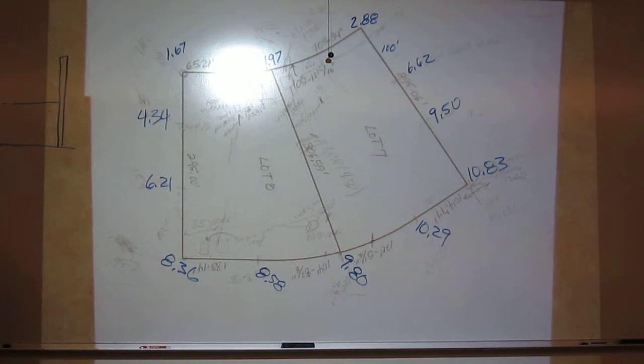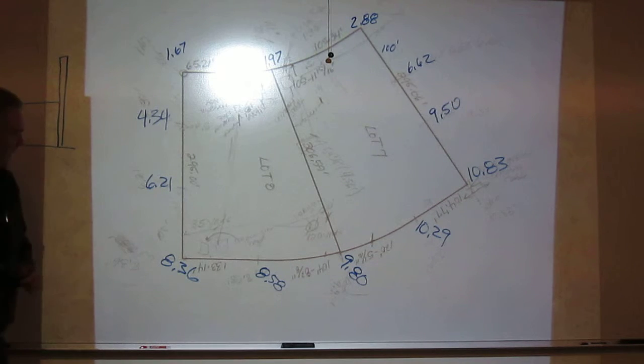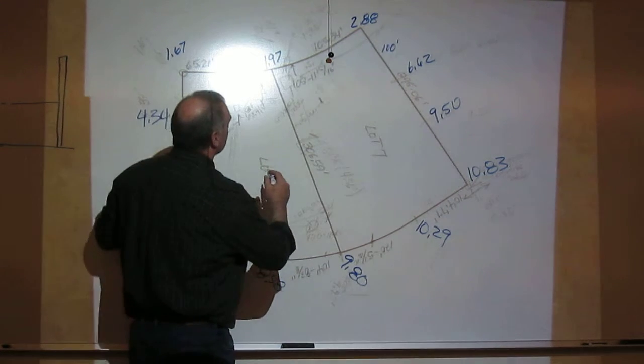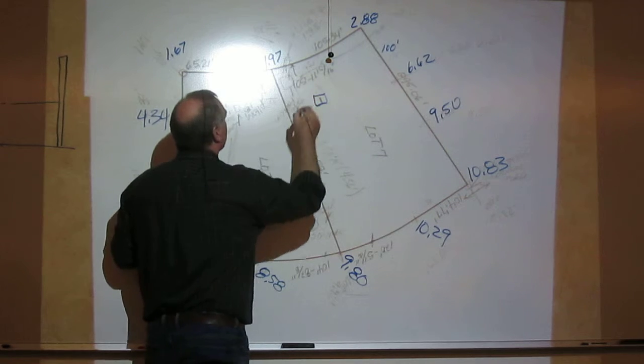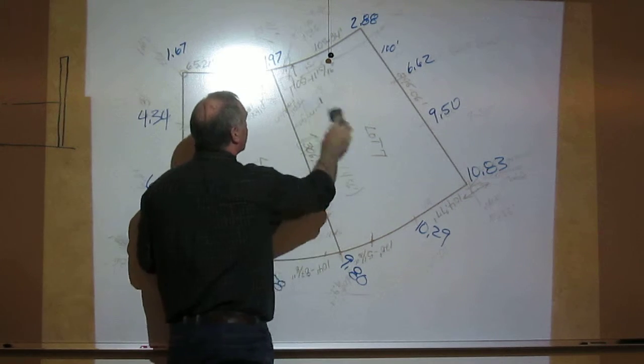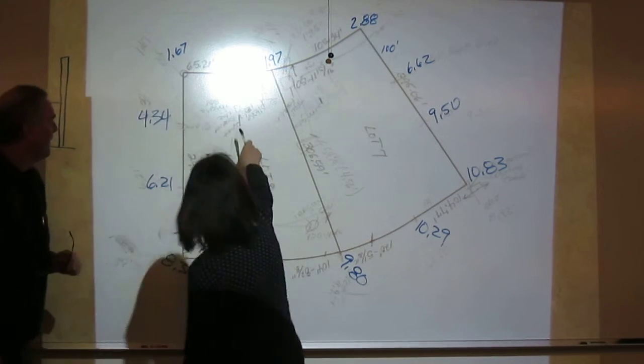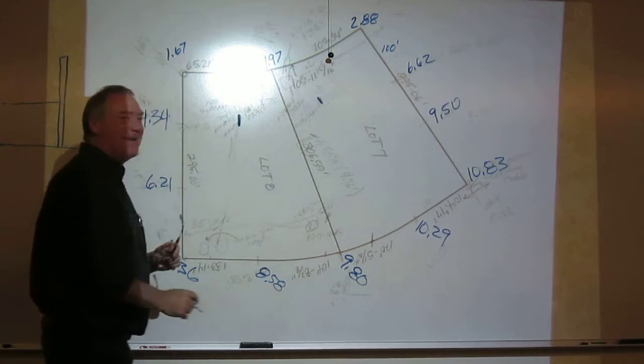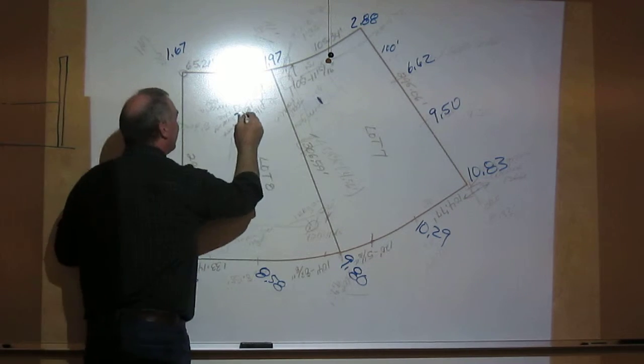9.50, 10.83 on the bottom corner. 10.23, 10.29, 9.99. Did we go all the way to this corner here approximately? I think we did didn't we? 9.80. Then we had halfway, yes, 8.58. And then in the corner I had 8.36. 6.21 is the next one, and then the last one 4.34. Is that all of our elevation shots?